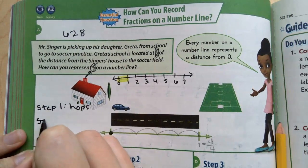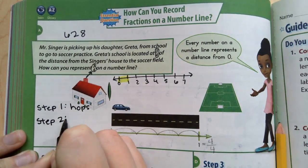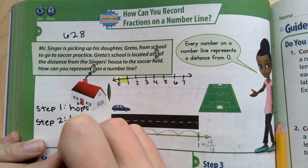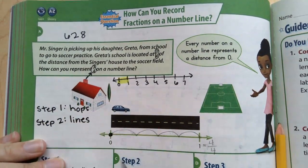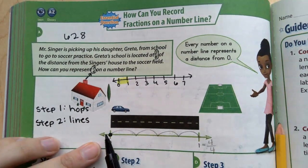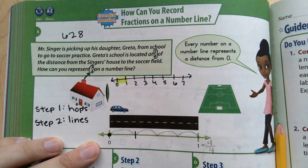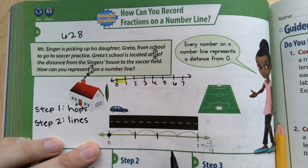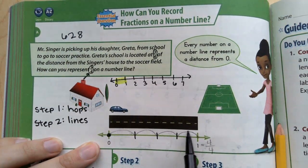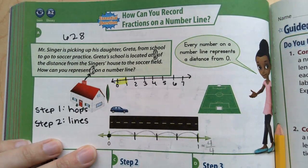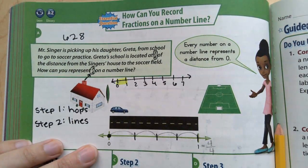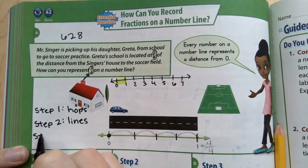Now we're on step 2. Step 2 is to draw your lines. So we already have our line for 0. We have our first hop and second and third and fourth. And finally, step 3.